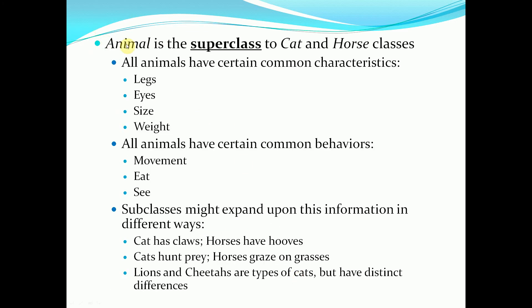In this example, Animal is the super class to Cat and Horse. All animals have certain common characteristics — let's say all animals have legs, eyes, size, and weight. All animals also have certain common behaviors such as movement, eating, and seeing. The subclasses might expand further on this information but in different ways. A cat might have claws whereas a horse has hooves. Cats would hunt their prey whereas horses would graze on grasses. Lions and cheetahs are both types of cats but they have distinct differences — for example, their fur coat patterns are different.